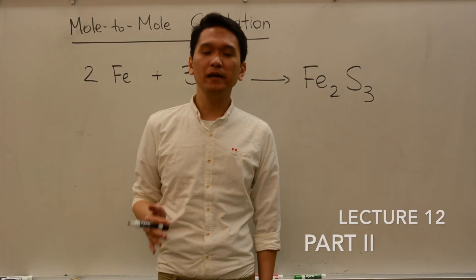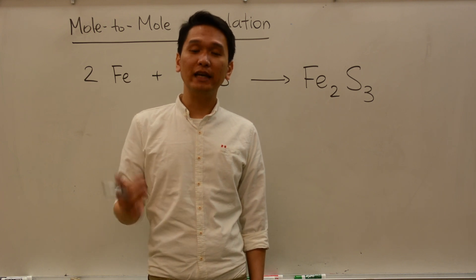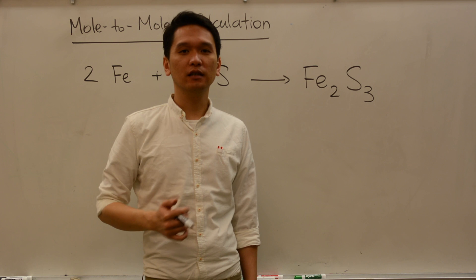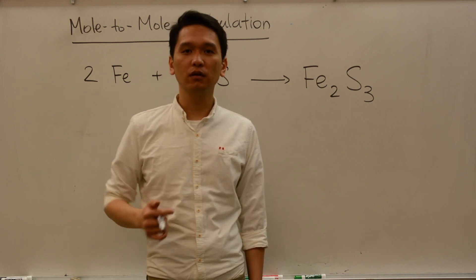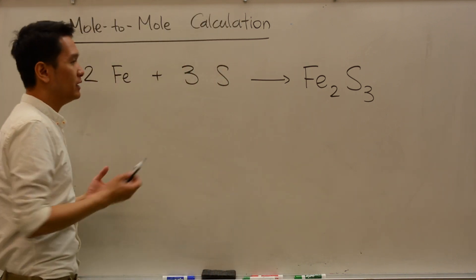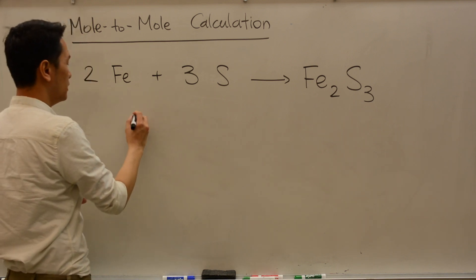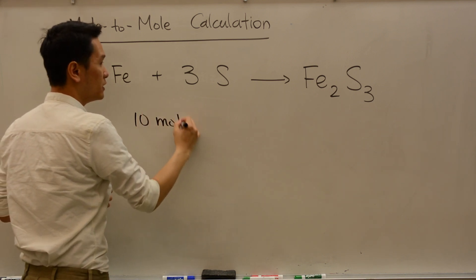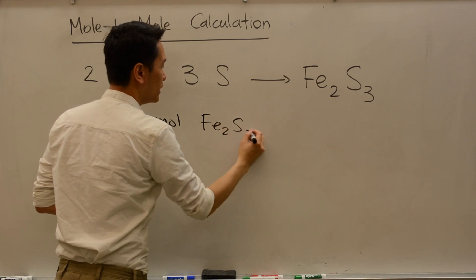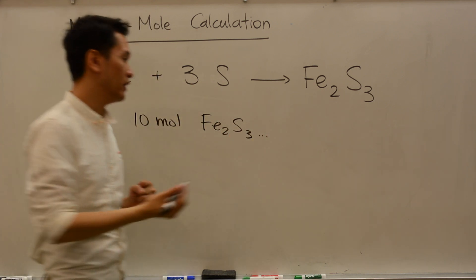The type of calculation you will be asked to do relating to the chemical reaction equation is a mole-to-mole calculation. For example, if I want to make 10 moles of the product Fe2S3, how many moles of sulfur do I need?